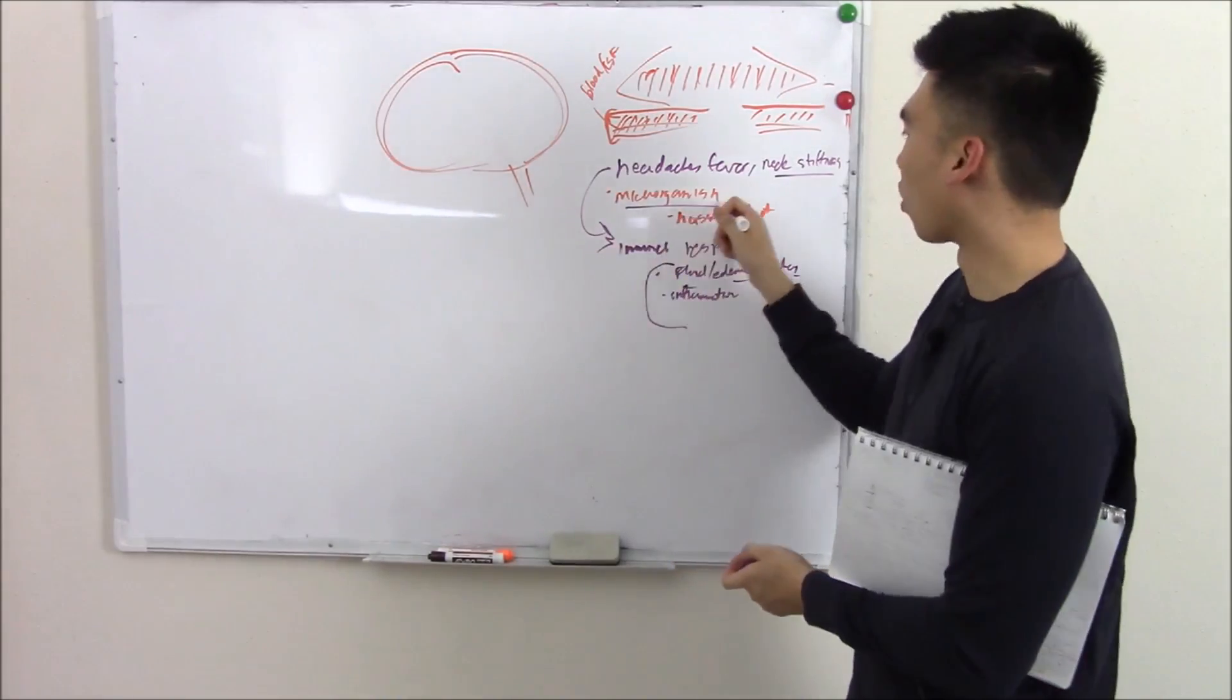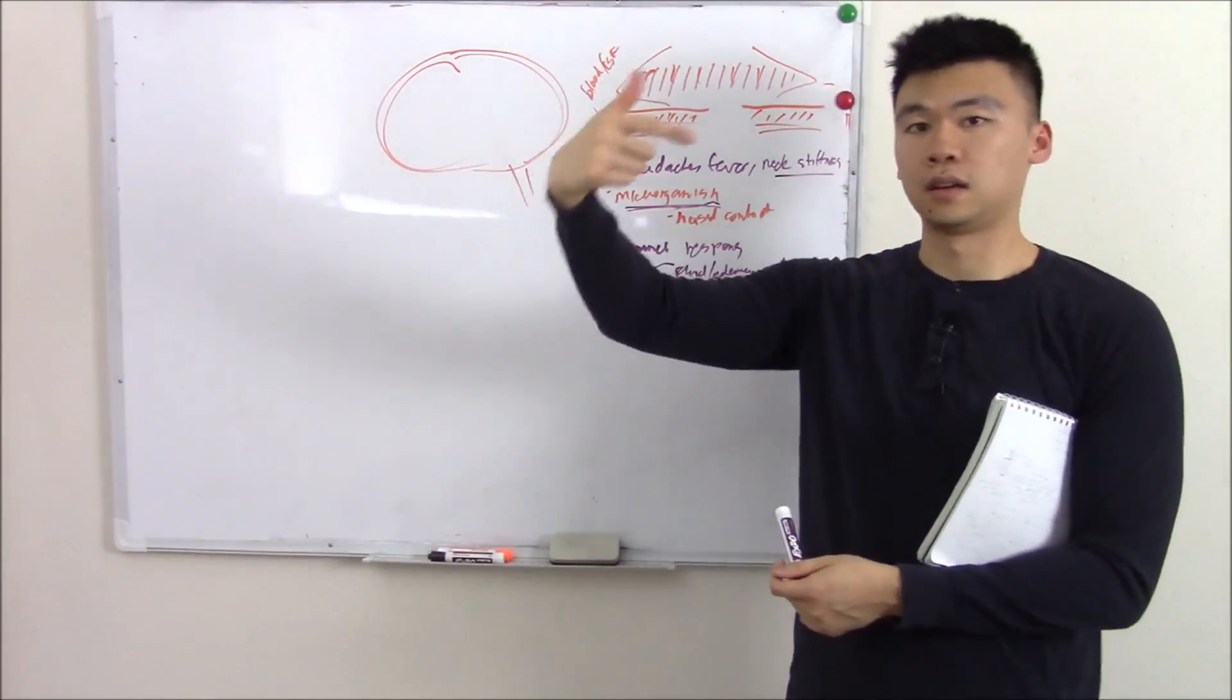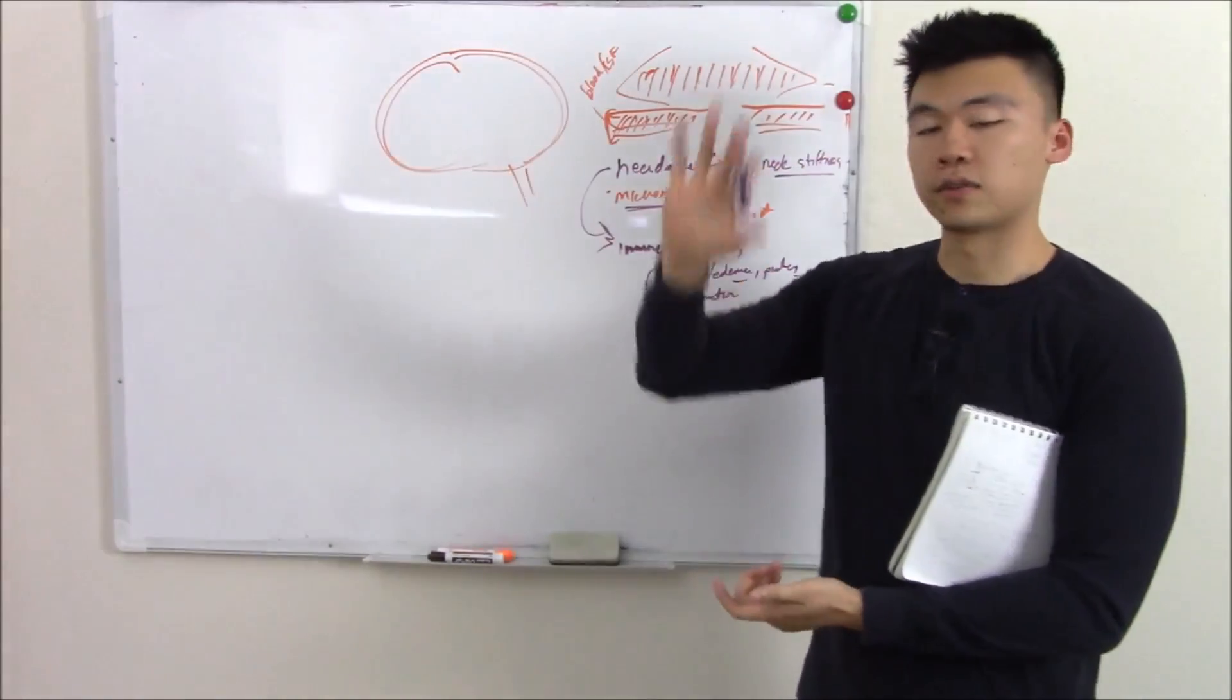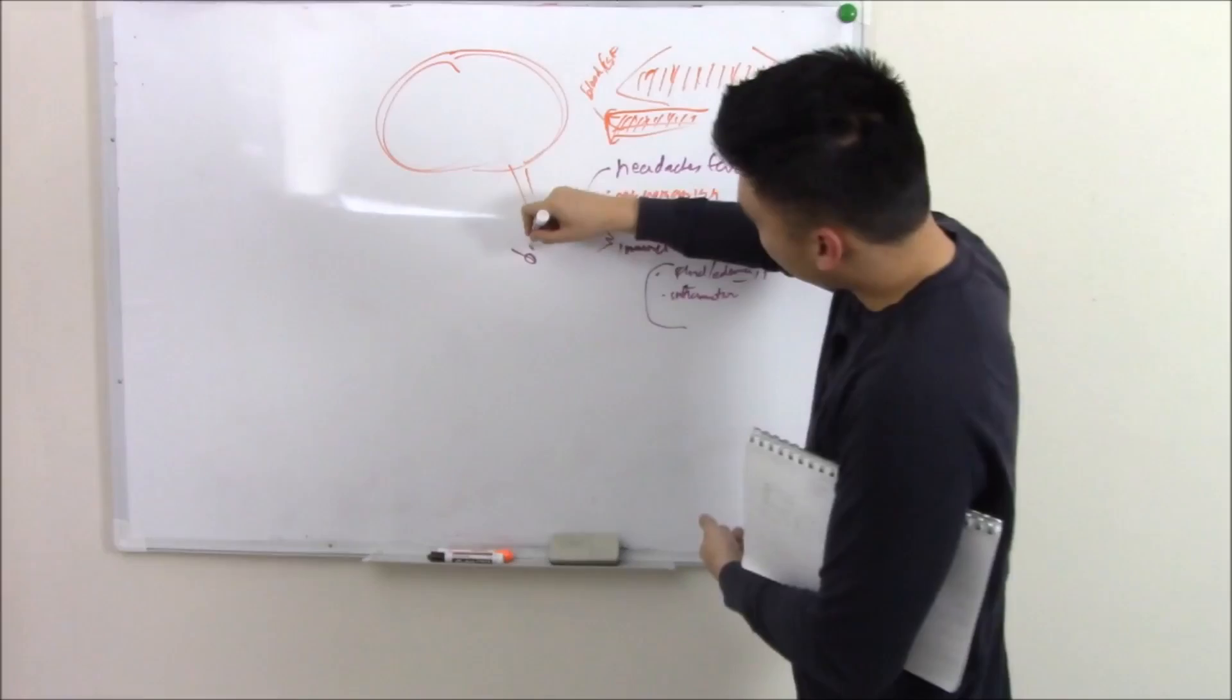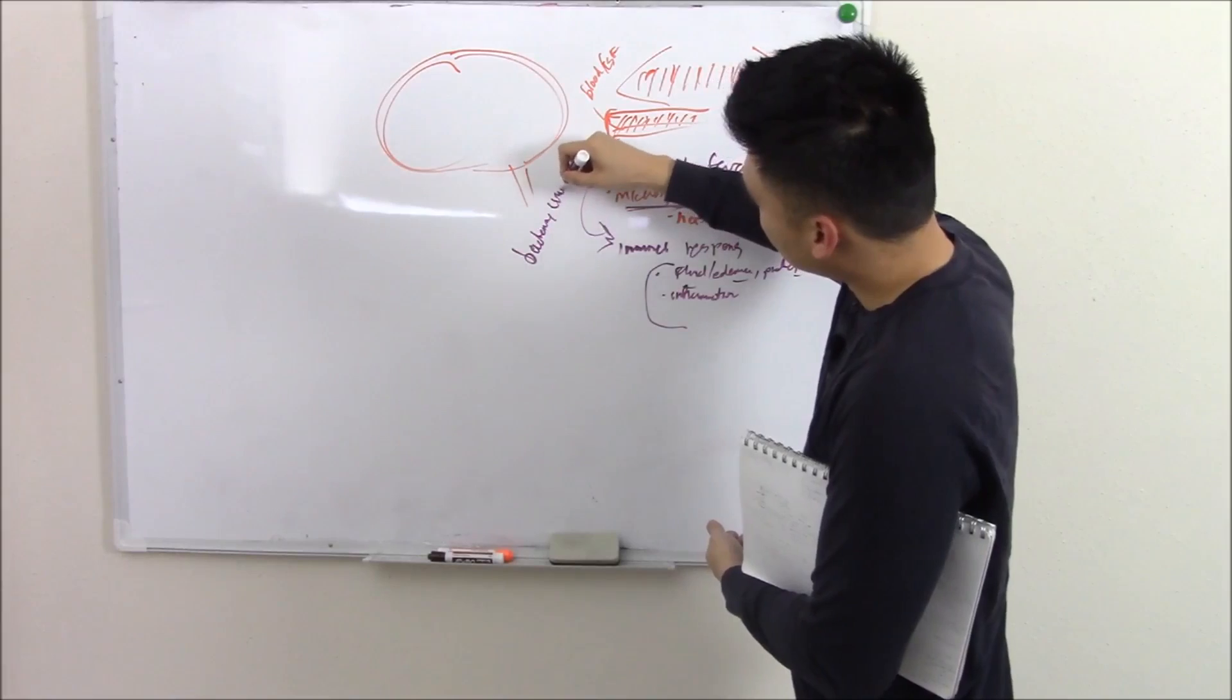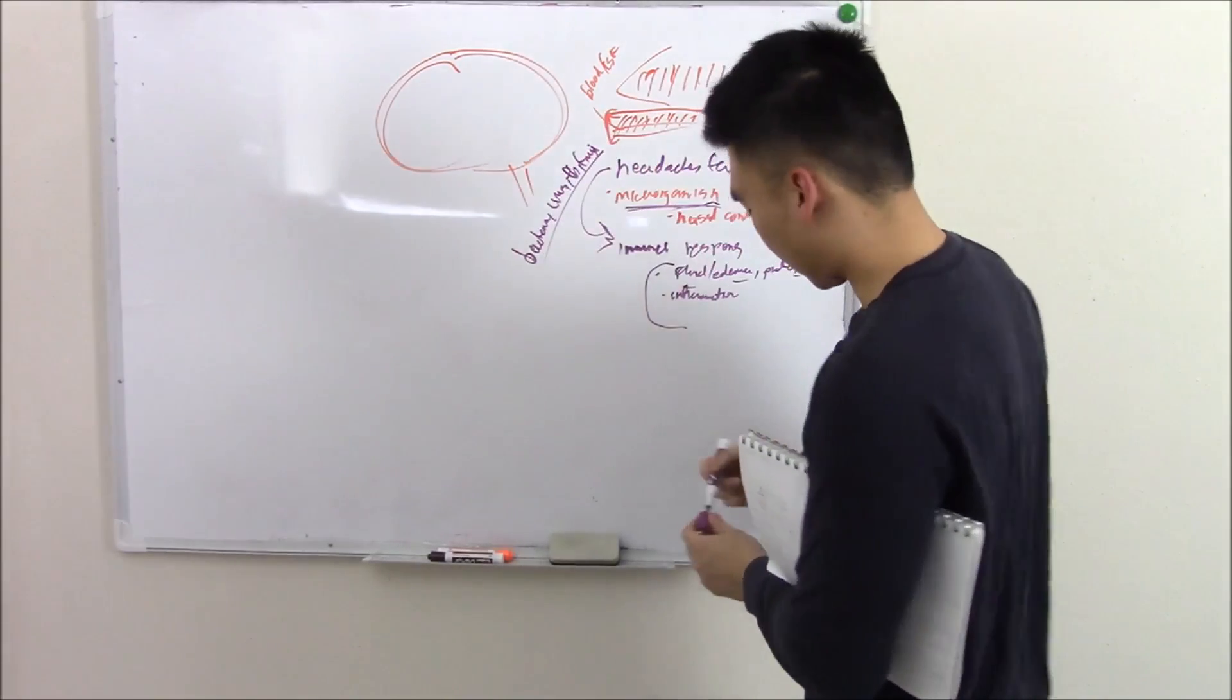Now understand the microorganisms - that includes bacteria, viruses, fungus, parasites. Everything basically from your micro block. You can get into your bloodstream, go into your meninges. But the main ones are bacteria, viruses, TB, fungus.